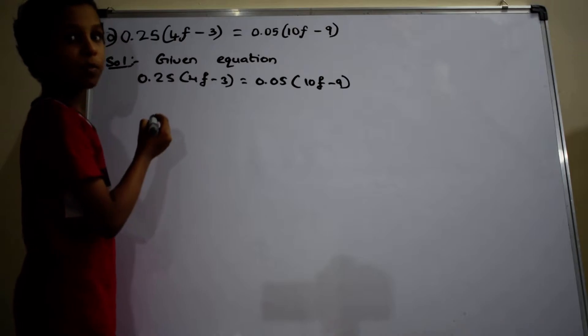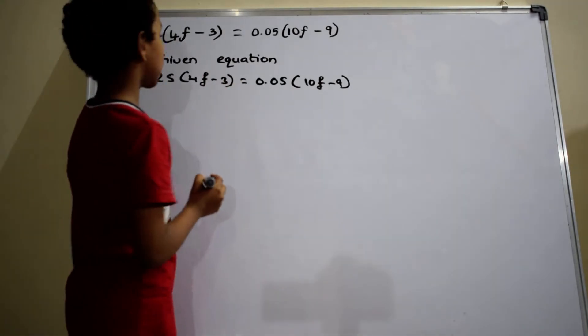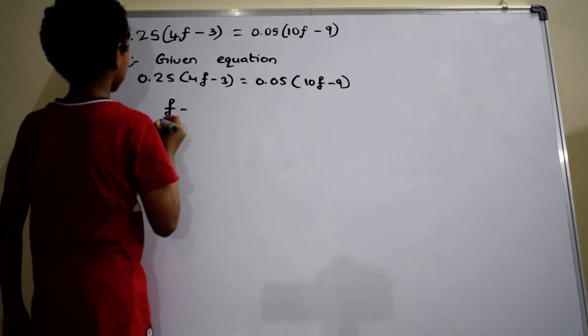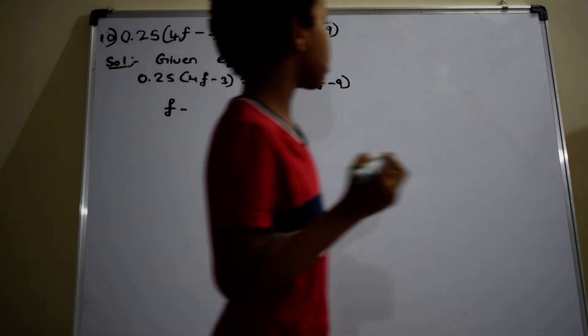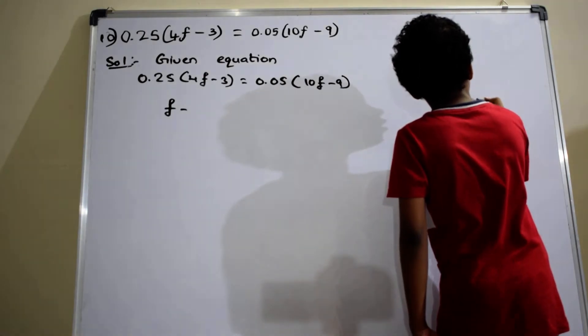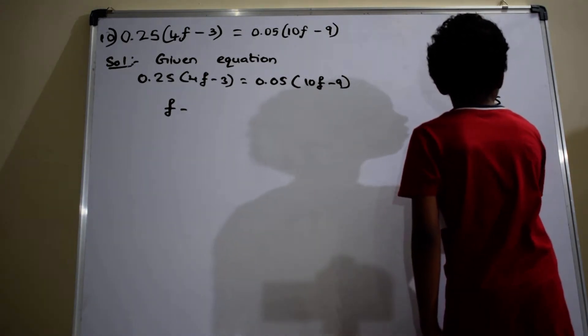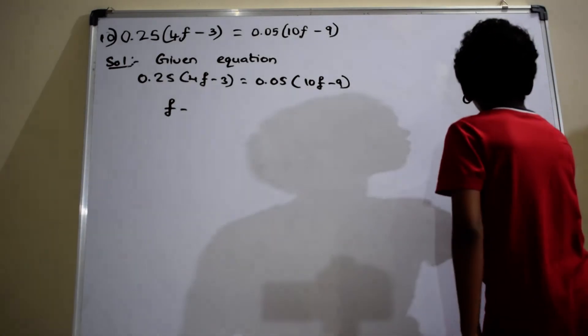Now, I am just multiplying these two terms. 0.25 into 4f equals to f minus 0.25 into 3. 3 into 5 equals 15.